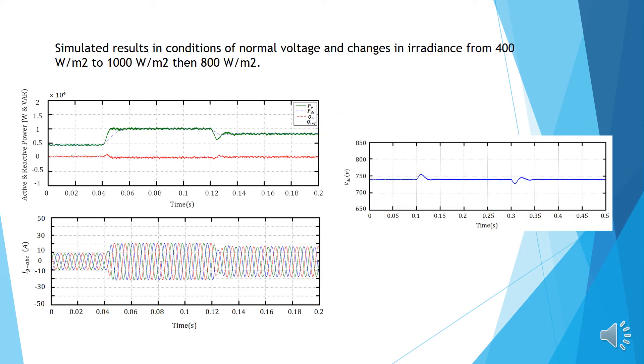In this case, the effect of radiation changes on power and the grid current has been investigated. In all radiation conditions, the THD is less than 1.6% and DC-link voltage level changed slightly.